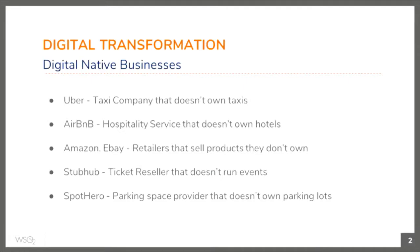Uber is a taxi company that doesn't own taxis. We know a few other digital-native businesses like that: Airbnb, a hospitality service that doesn't own any hotels; Amazon and eBay, who sell things they don't own; StubHub, a ticket reseller that doesn't run events; and SpotHero, a parking space provider that doesn't own parking lots.